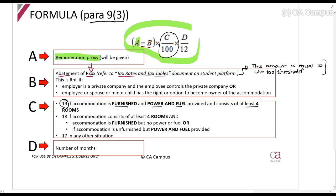Four rooms, not four bedrooms. If you have a living room, kitchen, bathroom, and bedroom, that's four rooms. So 18% is if they give you at least four rooms and it's either furnished but no power and fuel, or unfurnished but with power and fuel.